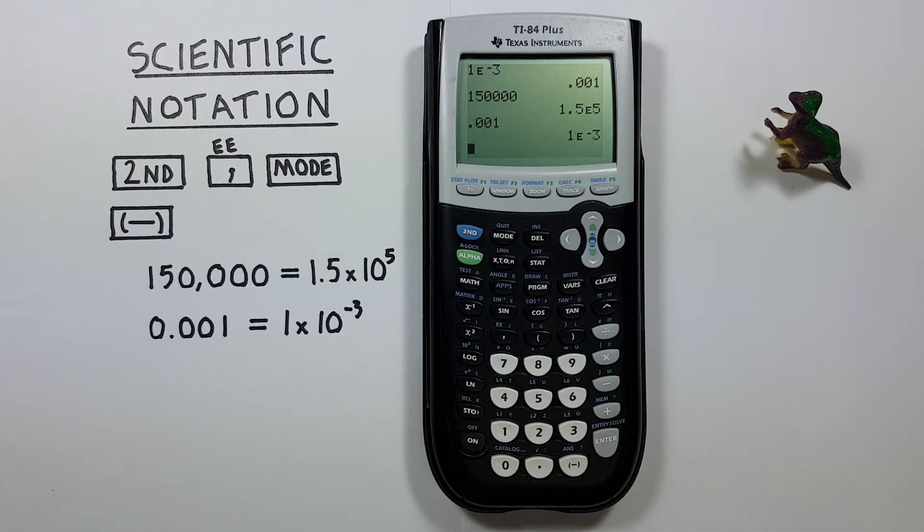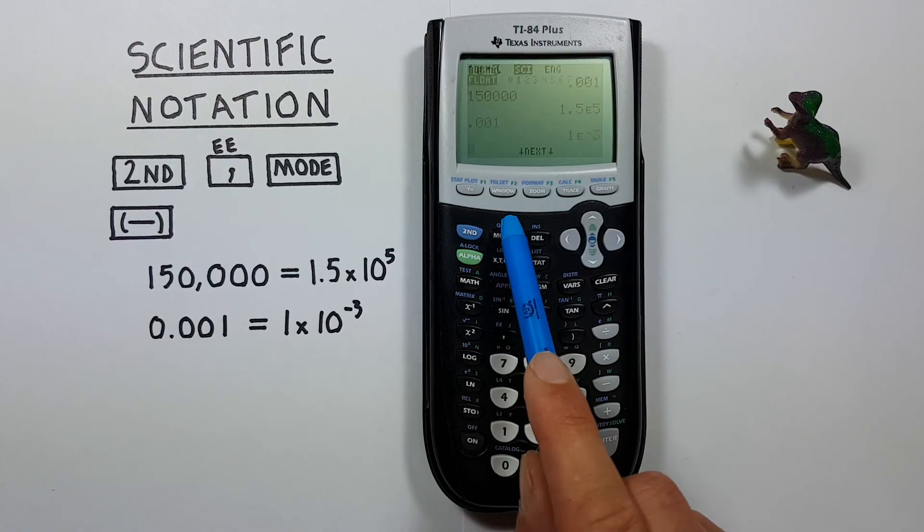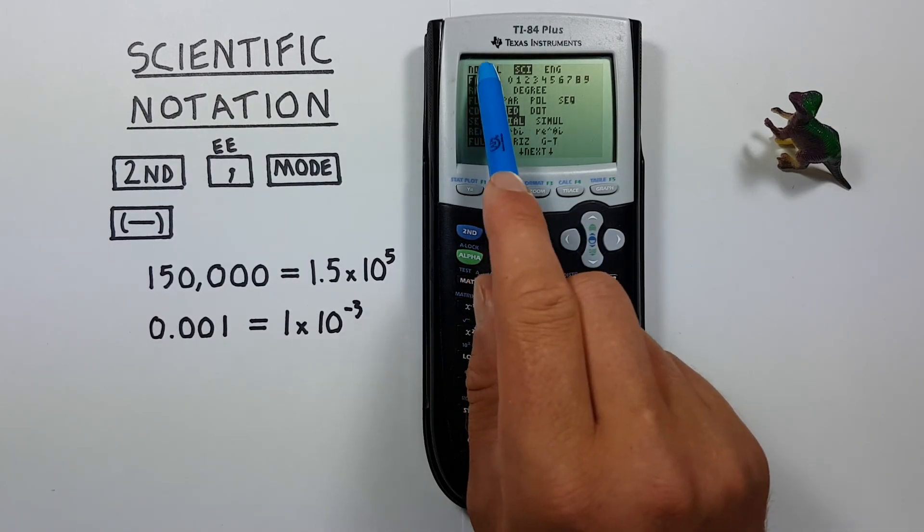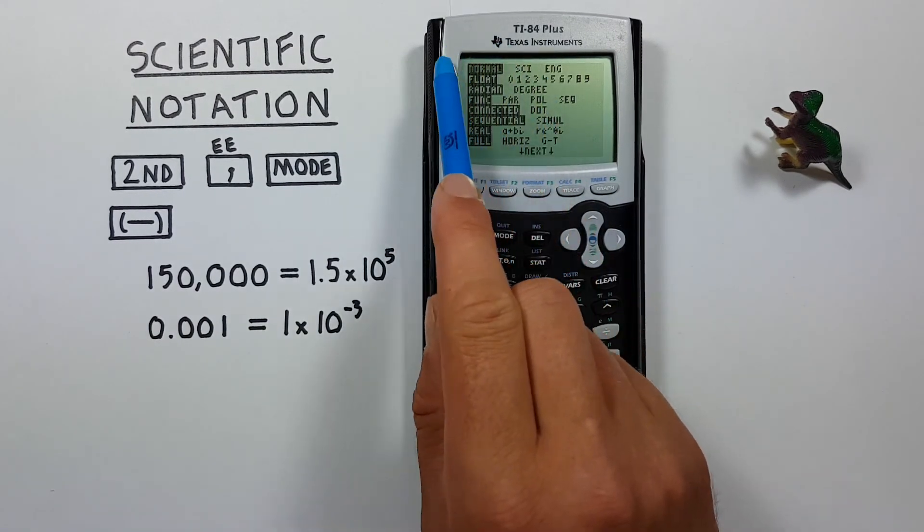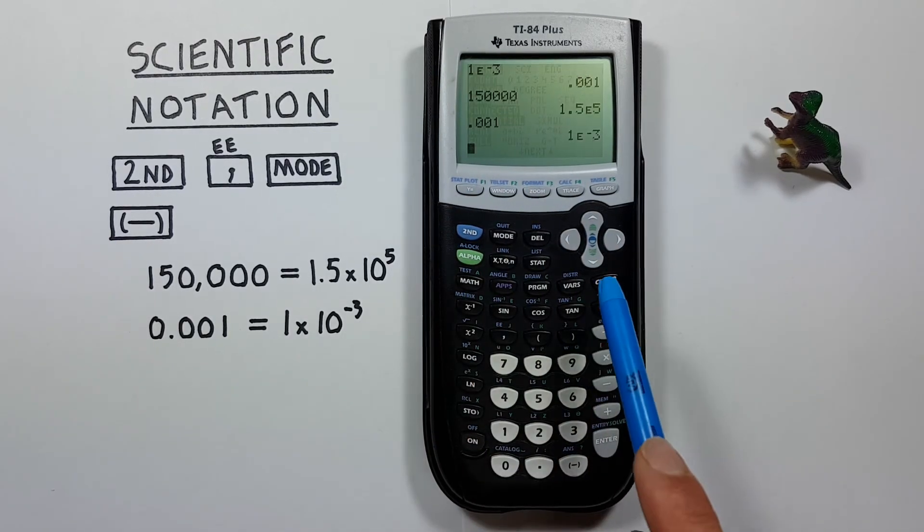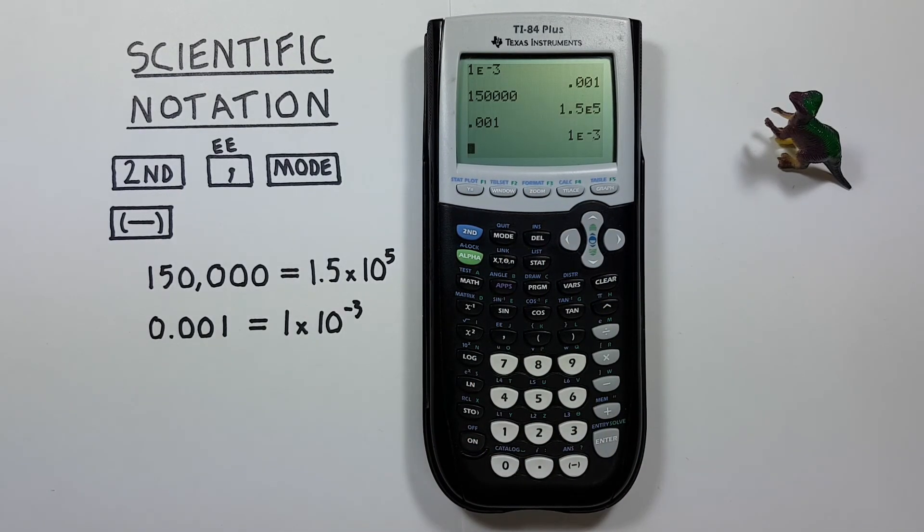And when we're done with this and want to make sure we're back in our normal mode, it's a good idea to go into the mode, highlight normal again, press enter so that's back in normal mode, and clear. Just so we don't trip ourselves up in the future.